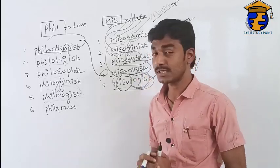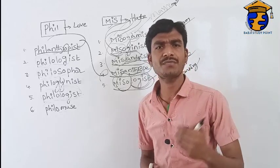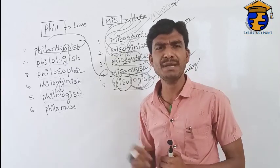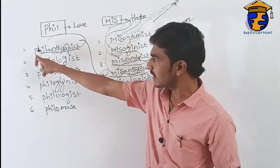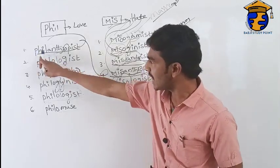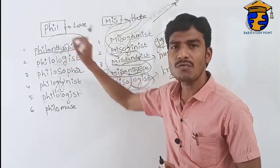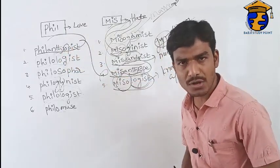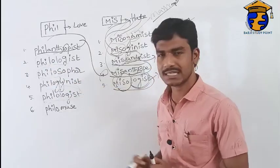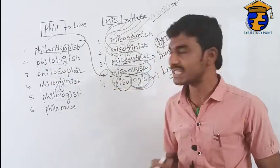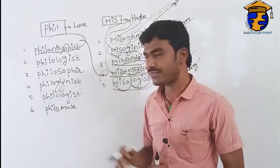In this video I have taken two prefixes: first 'phil' meaning love, and second 'mis' meaning hate. Look at the board: a lover of mankind is called a philanthropist, a lover of words is called a philologist, and a lover of wisdom is called a philosopher.